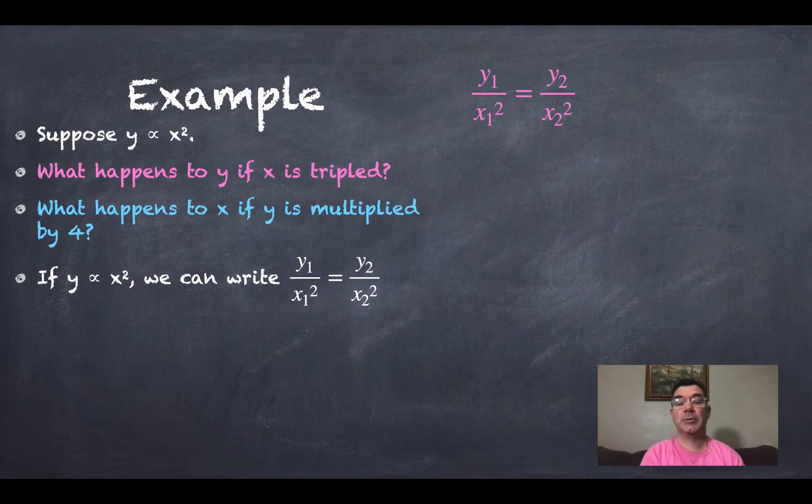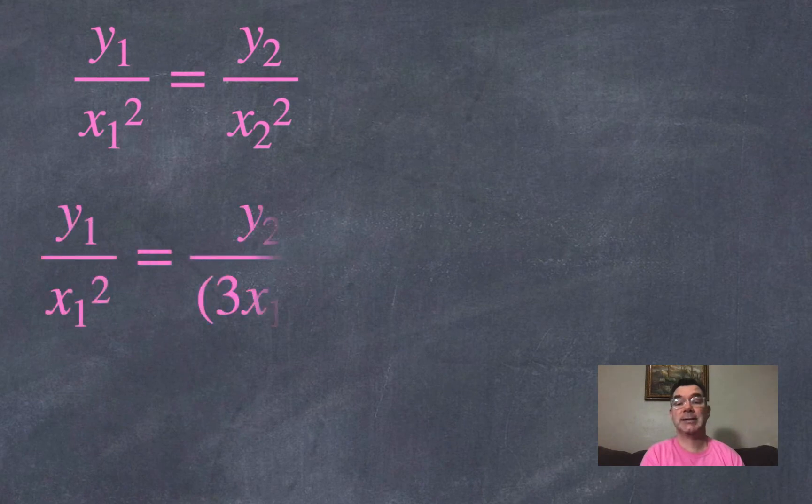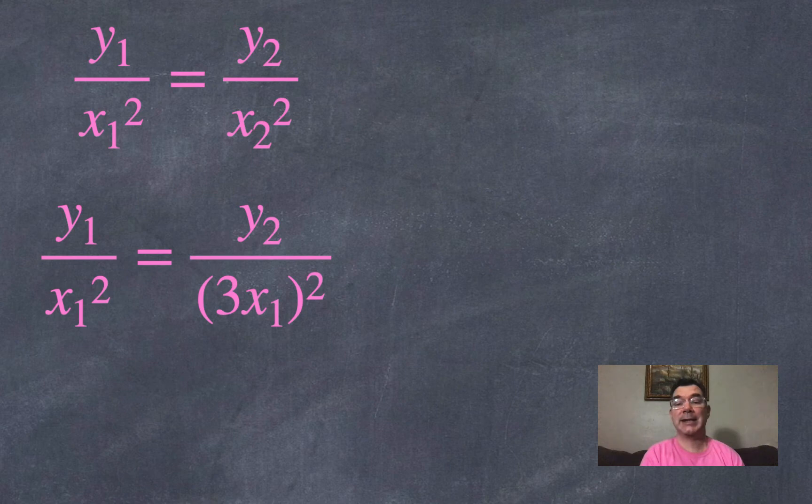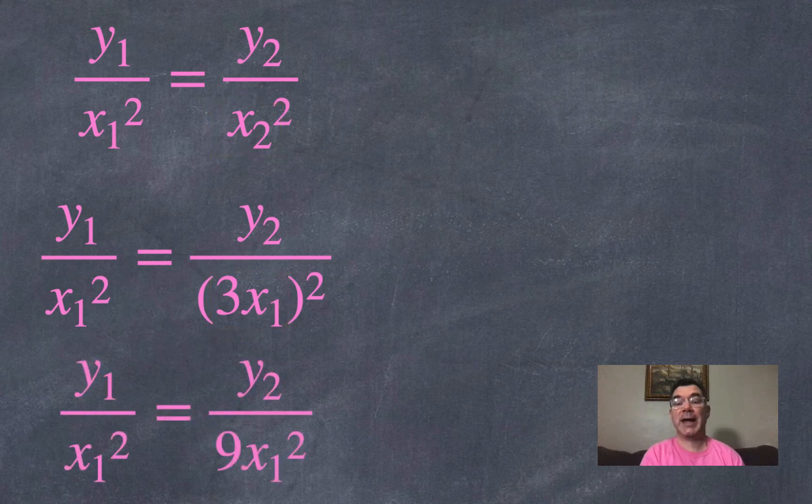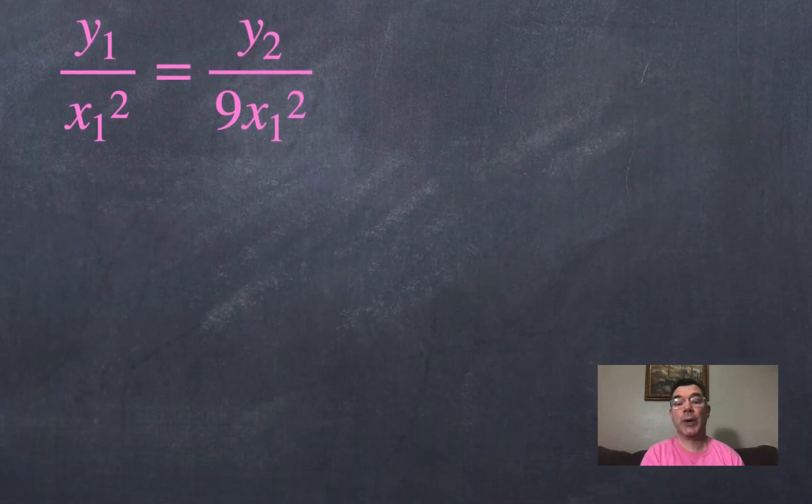All right, so I'm just rewriting that there because I'm going to answer the first question that talks about what's going to happen to y if I triple x. So if I triple x1 to get my second x, then I'm going to replace x2 with 3 times x1. And we're going to see what happens. So if I actually square 3 times x1, I get 9 times x1 squared.